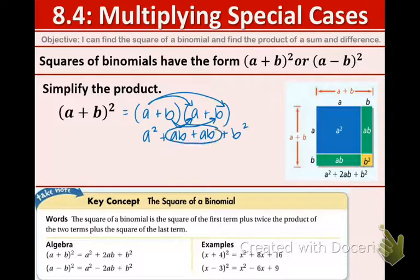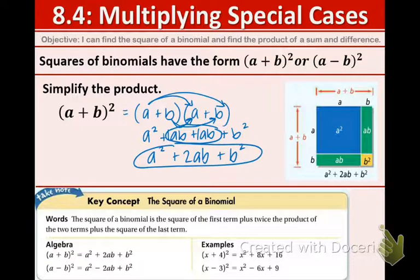Hopefully you remember from last section that the middle terms are almost always like terms. So those are little ones in front. We get 2ab and the outside two values always come down. So this is the simplified form of (a + b)².